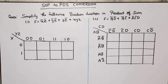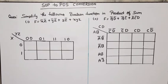Hello everyone. In this video lecture of digital electronics or digital system design, I am going to discuss two examples of SOP to POS conversion — means that your function is in SOP form, meaning sum of products, and we will convert and simplify it into product of sums.